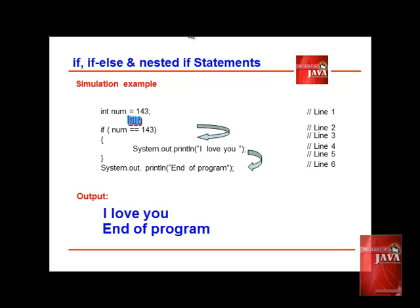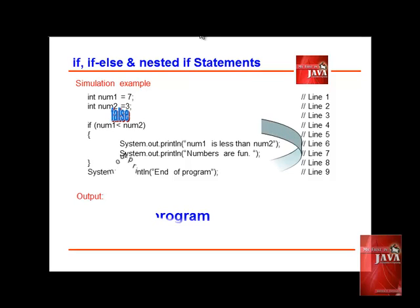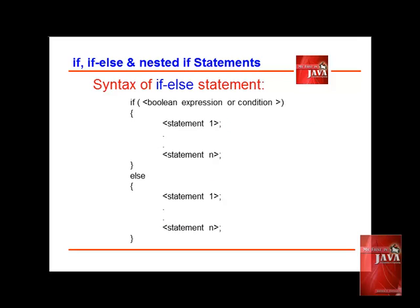How about if the condition is false? Let us consider another program. The program executes assignment of value 7 and 3 to NUM1 and NUM2 respectively. Next is an if statement that tests if NUM1 is less than NUM2. The condition is false because 7 is greater than 3. The if statement simply bypasses the two statements inside the curly braces and proceeds to the next statement, displaying 'end of program.' The if statement executes only if the condition is true.